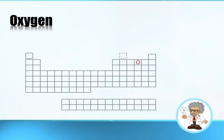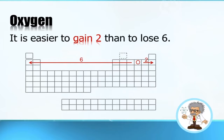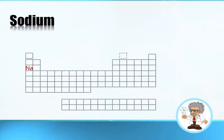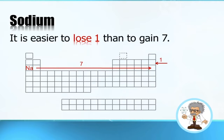Let's look at oxygen on the periodic table. Oxygen has six valence electrons. Is oxygen going to lose six electrons or gain two? It's easier to gain two. Sodium has one valence electron — will it gain seven or lose one? The easiest thing is to lose one. So it's easier to lose one than to gain seven.